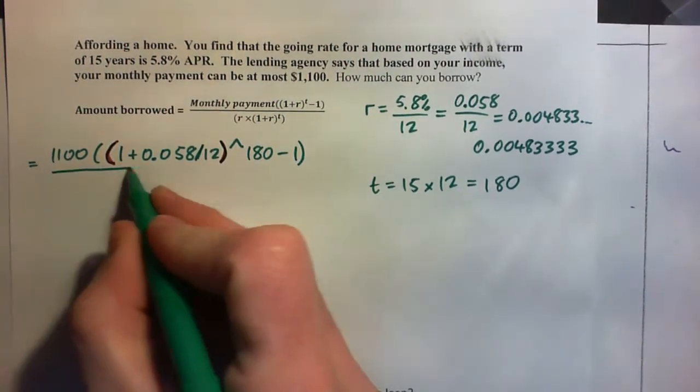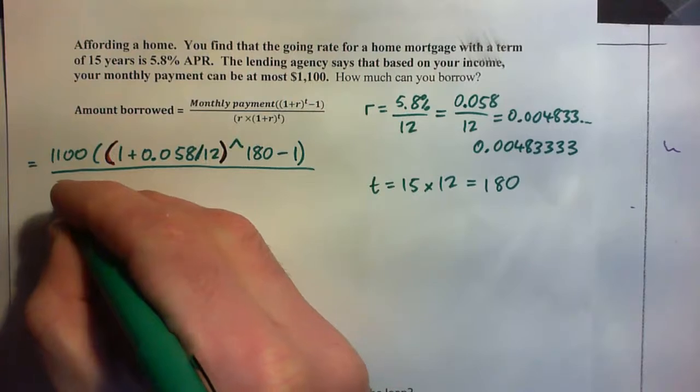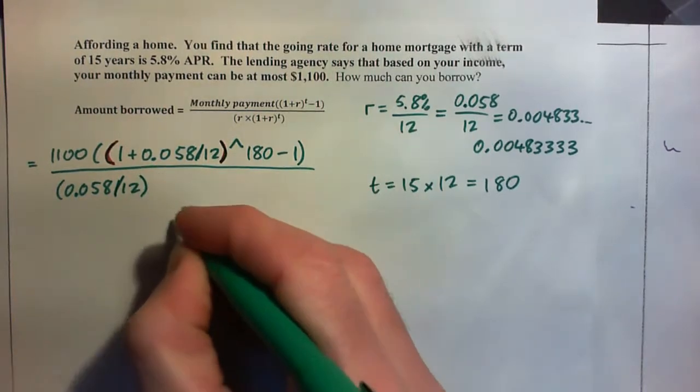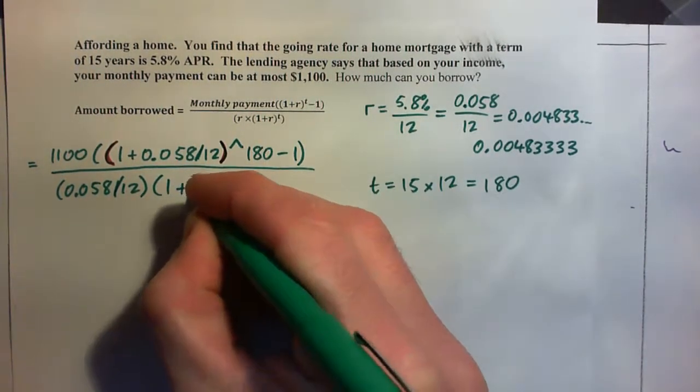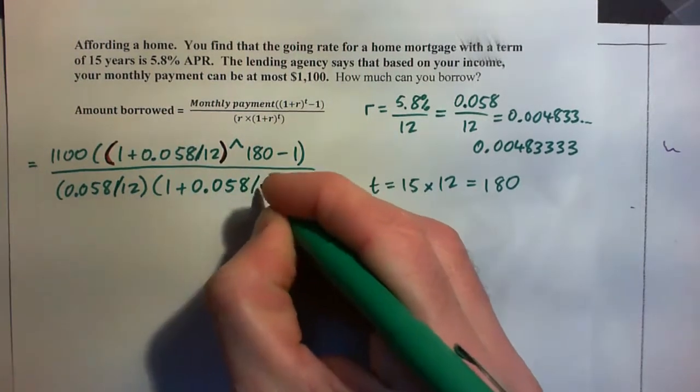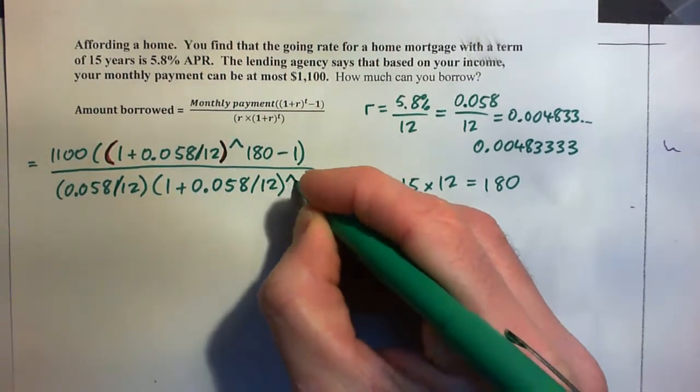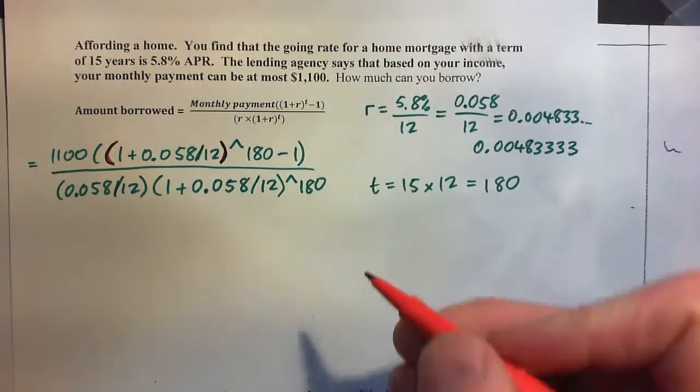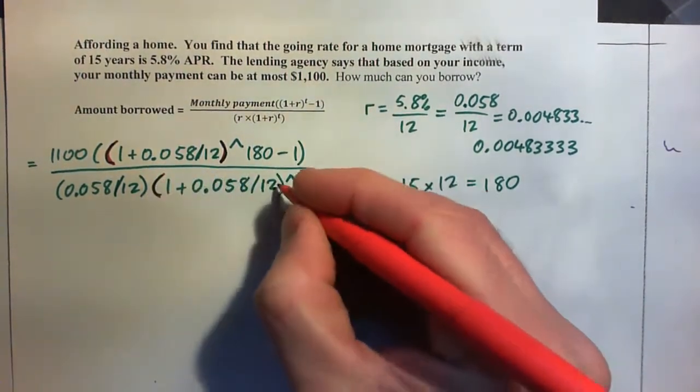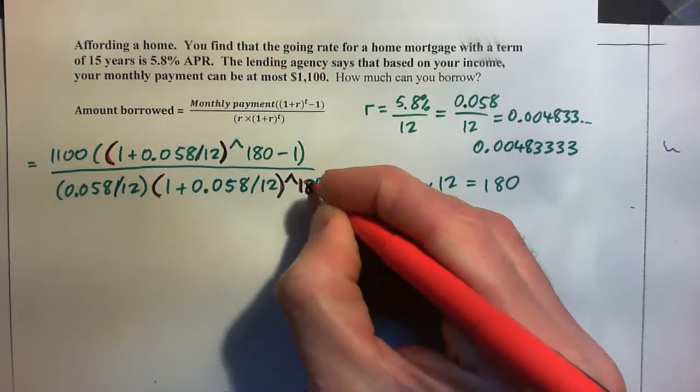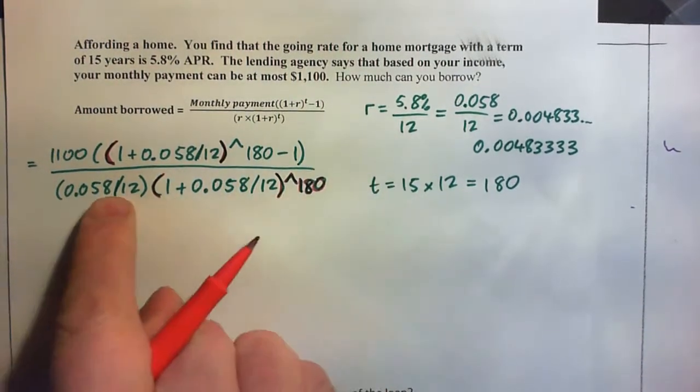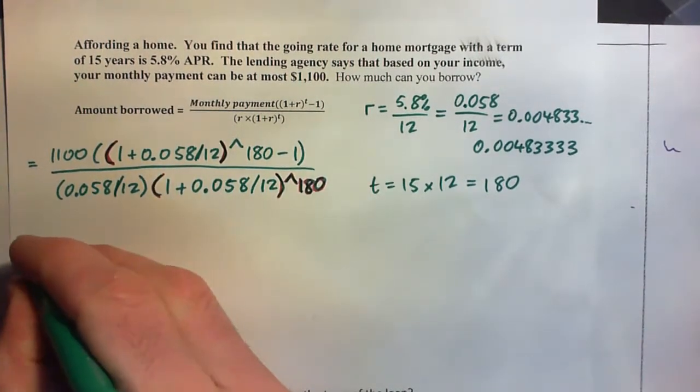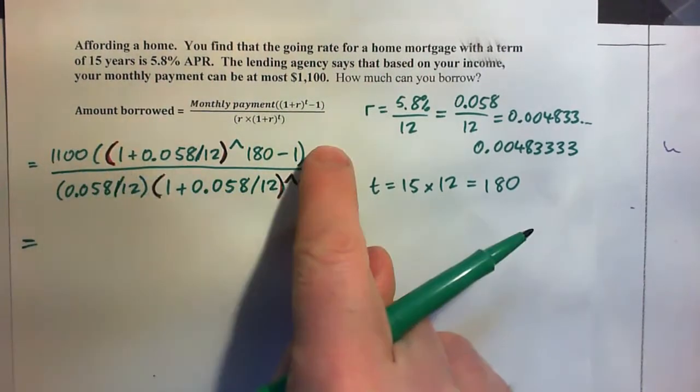And then that's all over R which is again 0.058 over 12 times 1 plus R, 1 plus 0.058 over 12 to the power of T, 180. Now notice that the calculator follows PEMDAS. So it's going to do just this to the power of 180. This power of 180 will not be applied to this part, just this part.